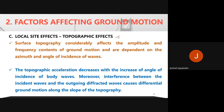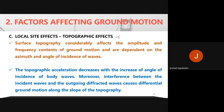Regarding topographic effects: the amplitude and frequency of ground motion depend on how the waves reach the surface, which depends on the azimuth as well as the angle of incidence of the incoming waves. With an increase in the angle of incidence of body waves, the acceleration decreases.